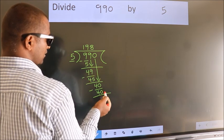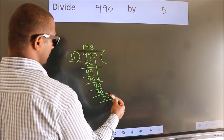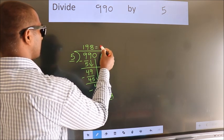No more numbers to bring it down. So we stop here. This is our remainder. This is our quotient.